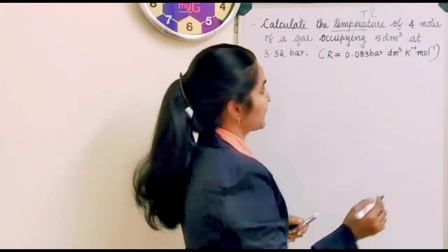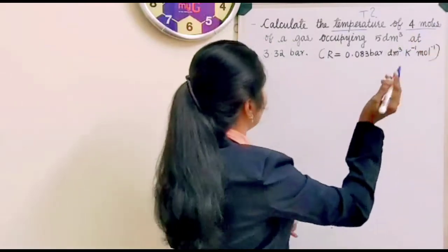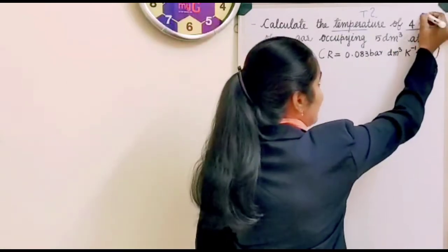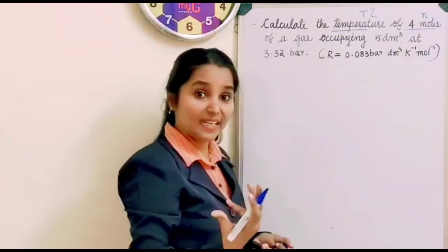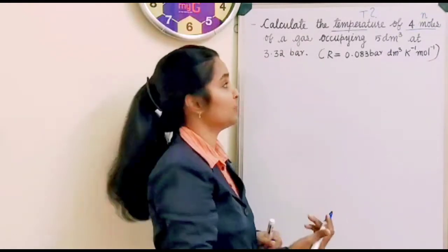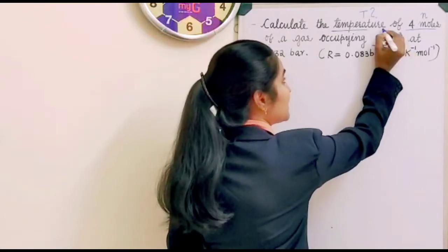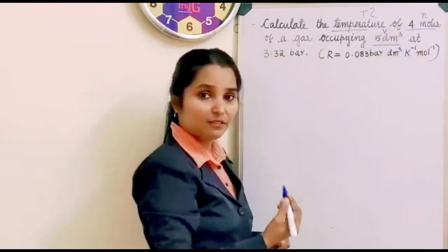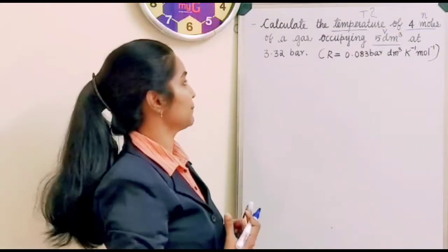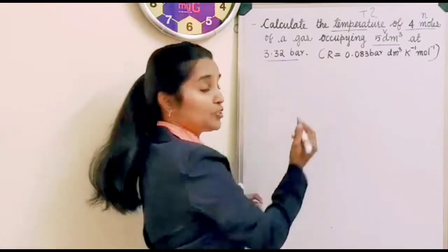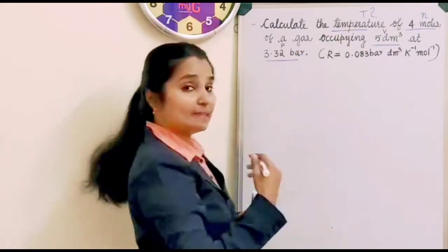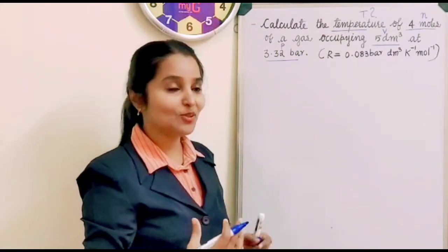In what case? So number of moles of that particular gas is given. How many moles? 4 moles. So this is n, number of moles. And 5 dm³ at 3.32 bar. So a volume is given. This is volume 5 dm³. It is occupying a volume of 5 dm³. At 3.32 bar. So a pressure is given. P is equal to 3.32 bar.